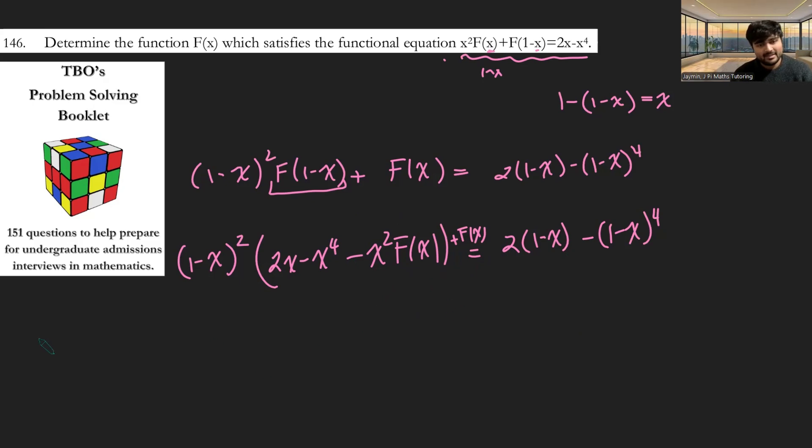And I'm going to kind of do that in a few steps here. So if I look at the f(x) on the left side, obviously there's one lot of f(x) there. But then I've also got to subtract x² lots of (1-x)² from that. And then what else do I have? Well, I just have (1-x)² times (2x - x⁴). And this is going to equal 2 lots of 1-x minus (1-x)⁴.